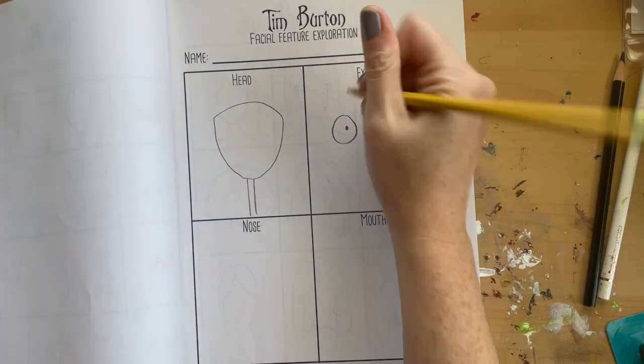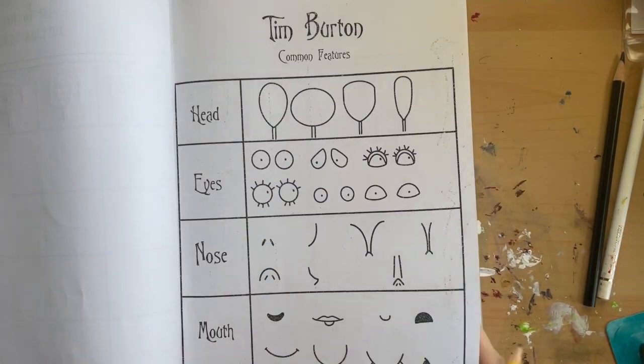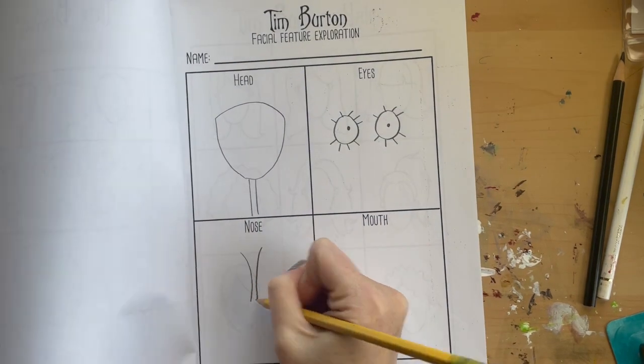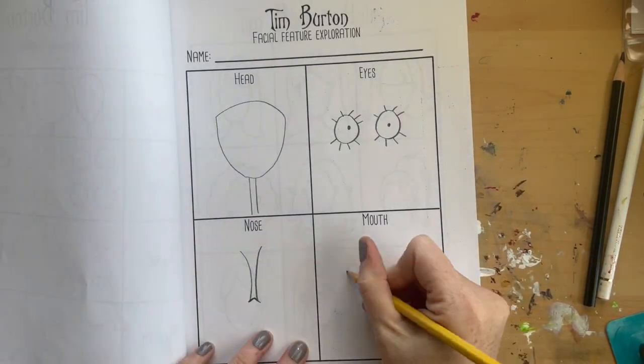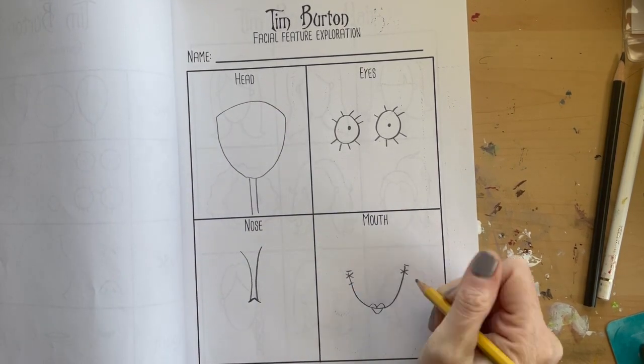Once you've decided on your head, eyes, nose, and mouth, that will help you when you go to your practice sketch. So plan what head shape, eye shape, nose shape, and mouth shape you want to use first.